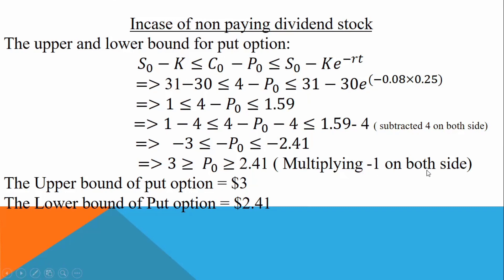Multiplying on both sides, we get: the lower bound is 3, so 3 is less than or equal to P0.